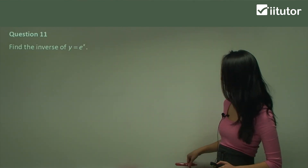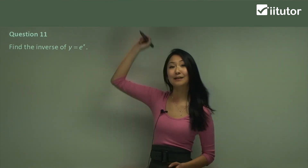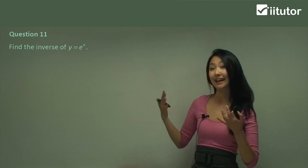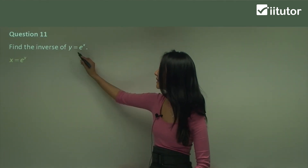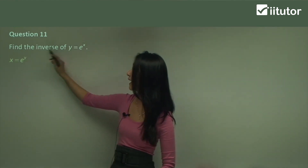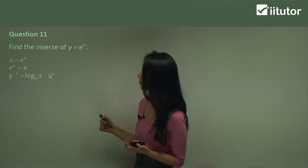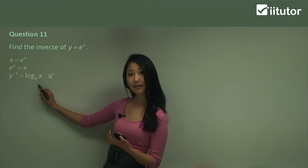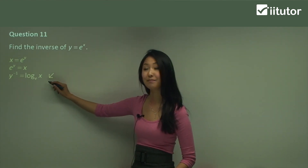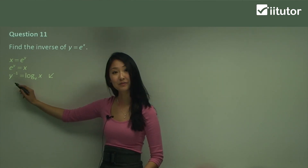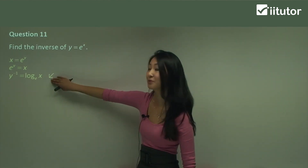In question 11, we want to find the inverse of y equals e to the power of x. We switch x and y, so we have x equals e to the power of y. Now we want to make y the subject, so we use the logarithm rule: y equals log base e of x, because e is the base of the index. And because we've found y as a subject, we write it with the inverse notation y⁻¹.